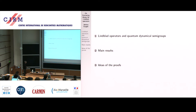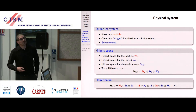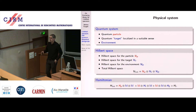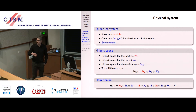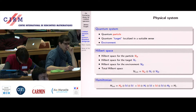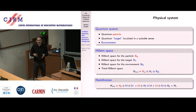Let me start with what is a Lindblad operator and what is a quantum dynamical semi-group. We are considering one quantum particle that interacts with a quantum system which is supposed to be localized — I will call this localized system a target. Both the particle and the target interact with the rest of the universe, which I call the environment. The quantum particle could be an electron with spin and the target a magnet, or the particle could be a neutron and the target a nucleus.